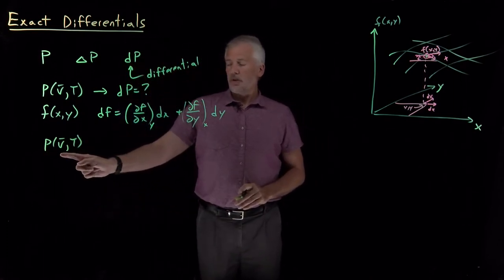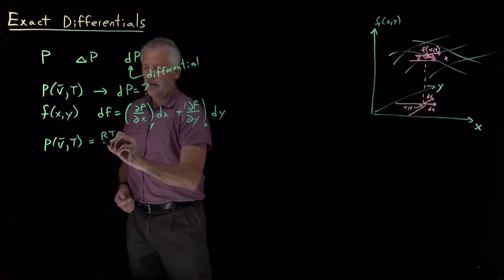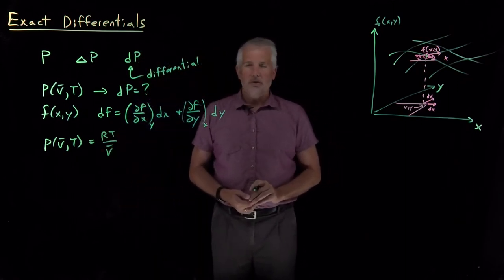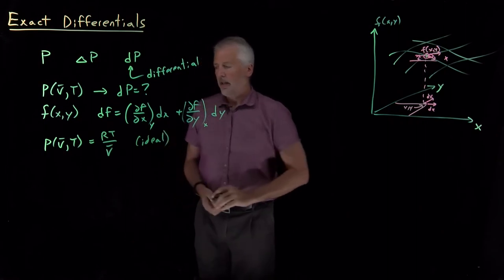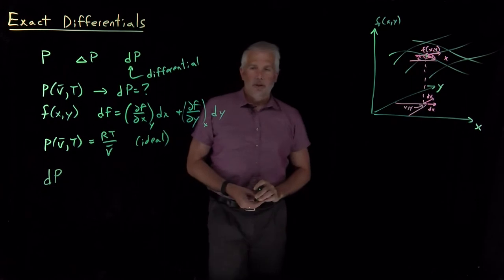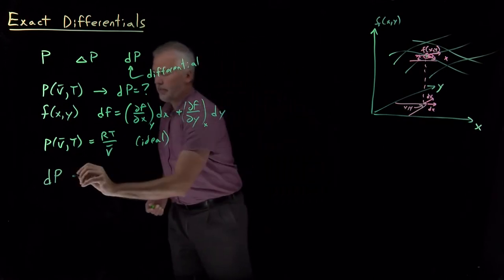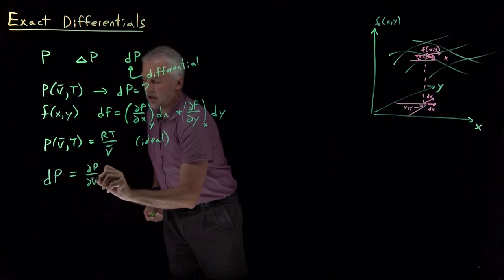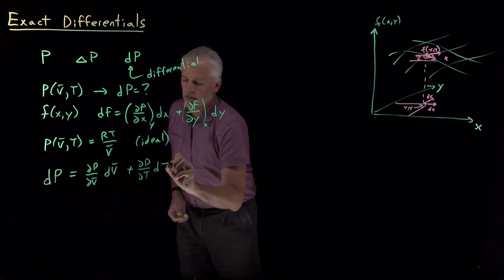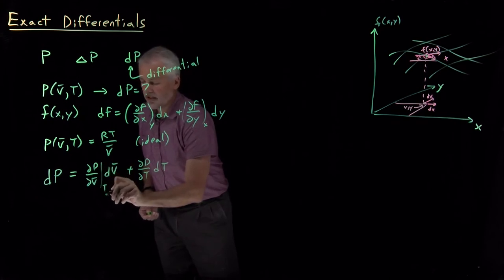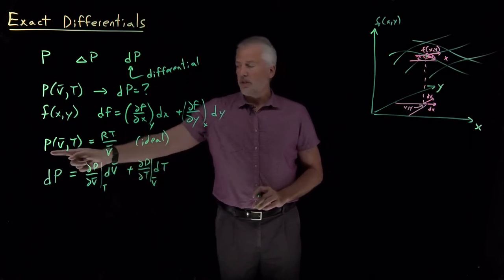Returning now to a thermodynamic equation of state, where we know how to calculate pressure as a function of molar volume V̄ and temperature T — that's our new f(x, y) — let's start simple with the ideal gas equation of state. We know how to write pressure as a function of T and V̄ for an ideal gas, and now we have enough information to say how much the pressure would change in response to some change in molar volume or temperature.